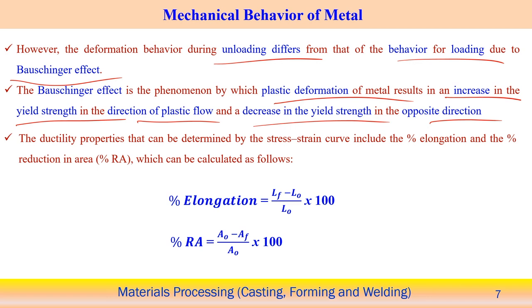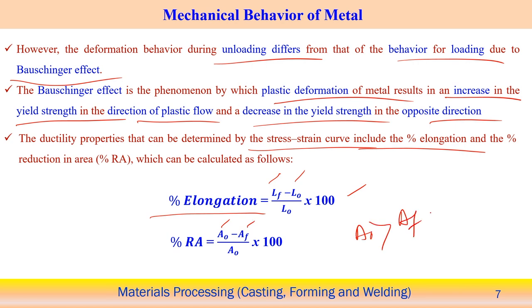Ductility is one of the measures to understand or to link directly with the metal deformation or material forming operation. We need to know the ductility associated with different deformation processes. Percentage elongation is the final length minus initial length divided by the initial length times 100. Similarly, percentage reduction in cross section area is A0 minus AF divided by A0 times 100, because necking causes reduction of cross section area. This is how we measure the ductility behavior of this particular material.